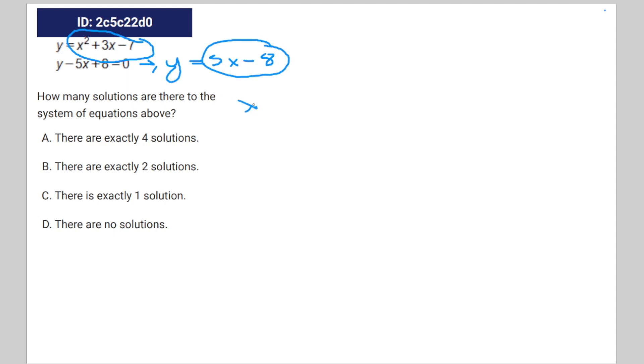So that's going to be x squared plus 3x minus 7 is equal to 5x minus 8. So we're going to subtract 5x minus 8 from both sides. You're going to get x squared minus 2x plus 1 is equal to 0.